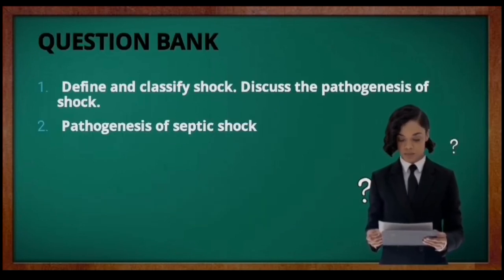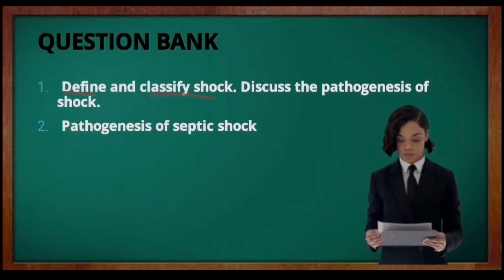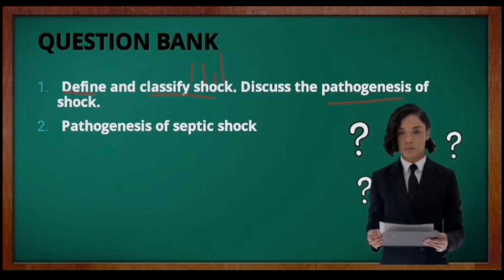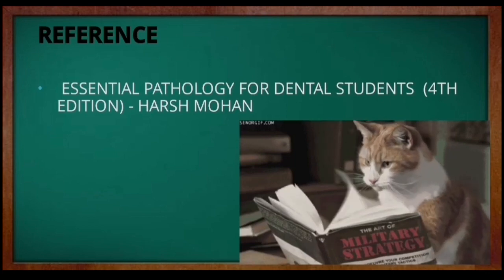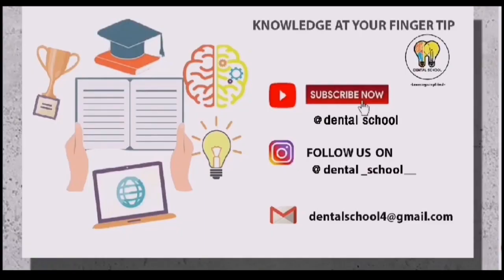With that, we have come to the end of the session. Previous exam questions include: define and classify shock, and discuss the pathogenesis of septic shock — which can be asked separately, so focus on that and remember to draw the flow charts. The reference used is Essential Pathology for Dental Students, 4th edition by Harsh Mohan. If you found this video informative, please like, share, comment, and subscribe. Press the bell icon to get notified of new uploads, and follow us on Instagram at Dental School. Thank you.